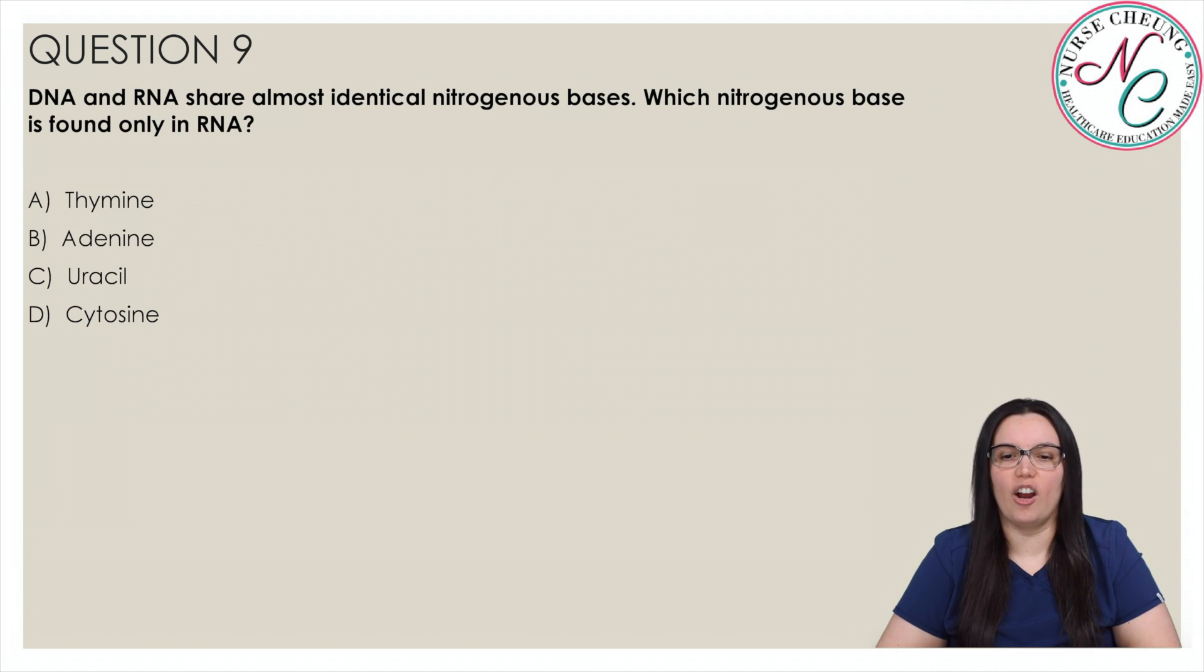DNA and RNA share almost identical nitrogenous bases. Which nitrogenous base is found only in RNA? Is it A: thymine, B: adenine, C: uracil, or D: cysteine? And the correct answer is C, uracil.